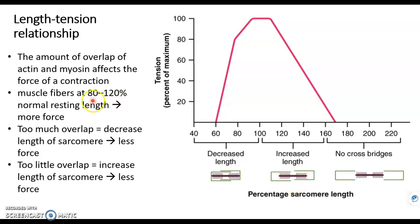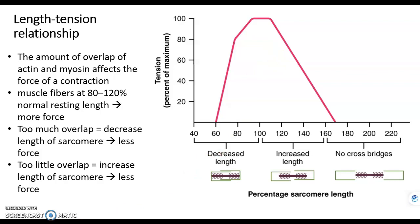Between 80 and 120 percent overlap is considered good. If there's too much overlap, there won't be much force left. If there's too little overlap, there'll be a weak force as well because there's not much for the myosin to grab onto. So we want that correct length-tension relationship.